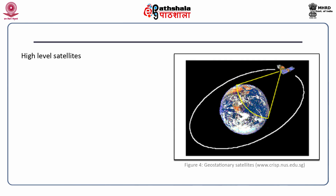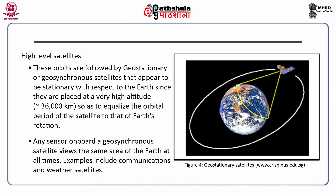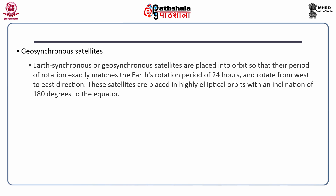Now coming to high level satellites. These orbits are followed by geostationary or geosynchronous satellites that appear to be stationary with respect to the Earth, since they are placed at a very high altitude close to about 36,000 kilometers, so as to equalize the orbital period of the satellite to that of Earth's rotation. Any sensor on board a geosynchronous satellite views the same area of the Earth at all times. Examples include communication and weather satellites. These satellites are placed into orbit so that their period of rotation exactly matches the Earth's rotation period of 24 hours and they rotate from west to east.